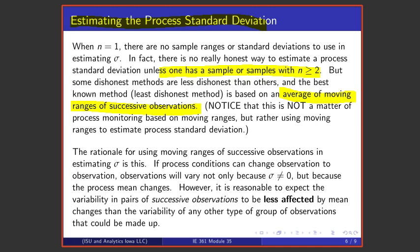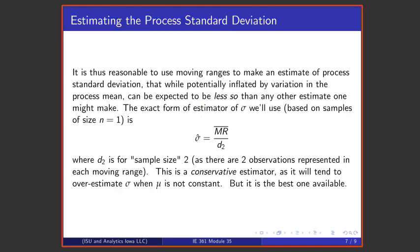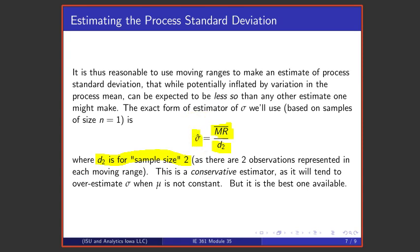The rationale is that moving ranges of successive observations will be inflated by any movement of a process mean, but they're going to be less inflated than anything else one could think of. It's reasonable to expect variability in successive pairs of observations to be less affected by movement of a process mean than any other type of grouping. So one takes an average moving range and divides it by little d2 based on sample size 2, thinking of that as a conservative estimator of process standard deviation — it will tend to overestimate sigma when the process mean is not constant.